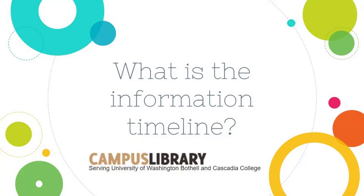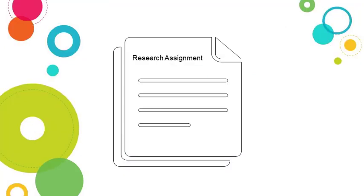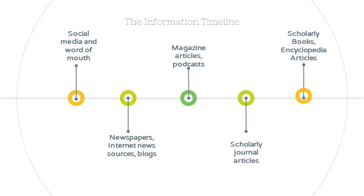Welcome to What is the Information Timeline? from the Campus Library. You have a topic for your paper or assignment that you would like to research. How do you know what types of information will be available on your topic, where different sources can be found, and how to evaluate them? The Information Timeline is a concept that we use to explain the idea that information is created and distributed at different speeds, based on type, and that we have different criteria for evaluating these different types of sources.